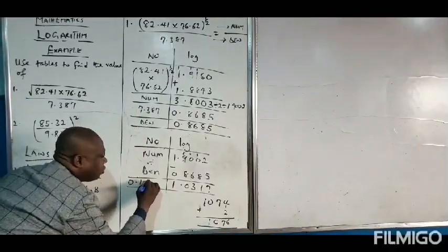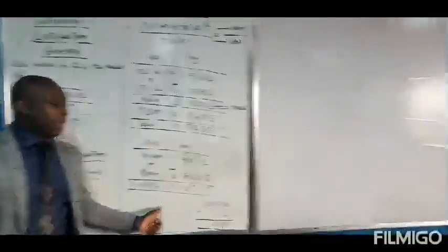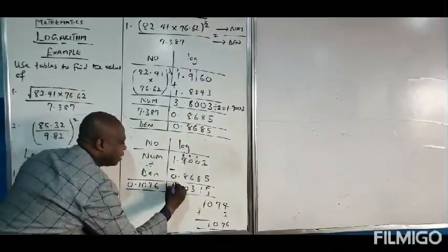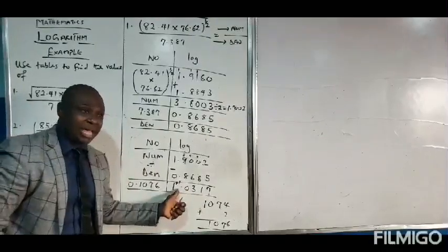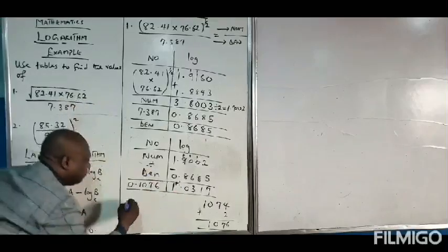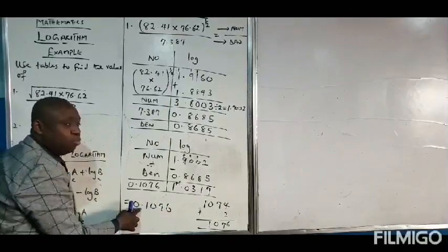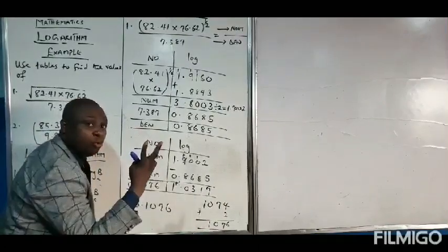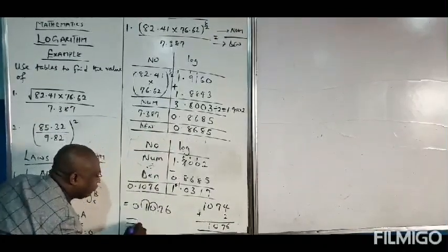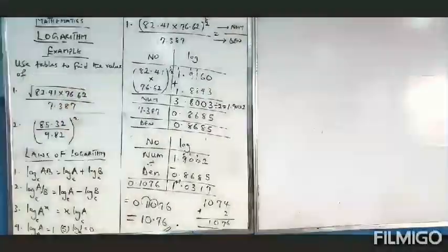All these values are still in decimal form, so the anti-log reading is 0.1076. To obtain the exact number, we add 1 to the characteristics. The characteristics was 1, so adding 1 gives us 2. A characteristic of 2 means the decimal moves two places to the right — giving us 10.76 as our final answer.